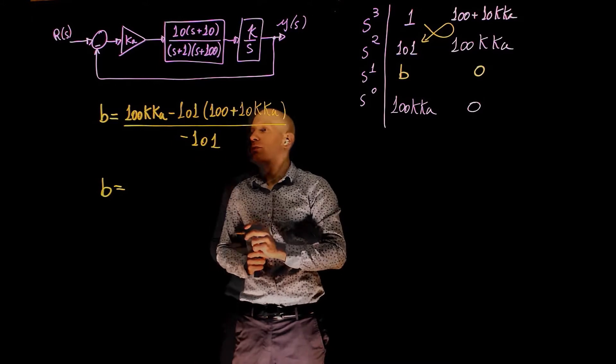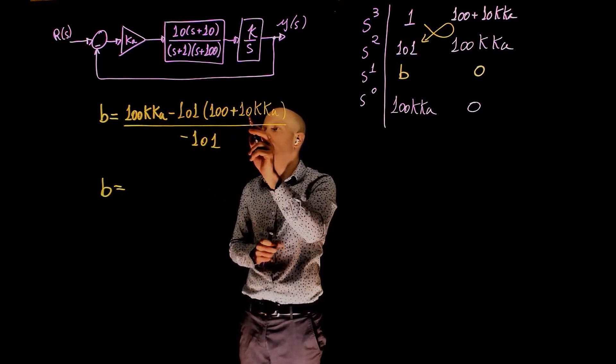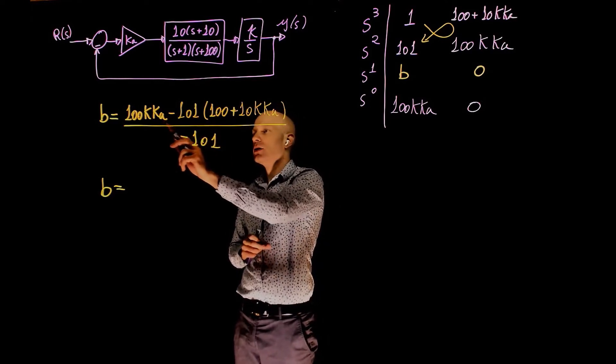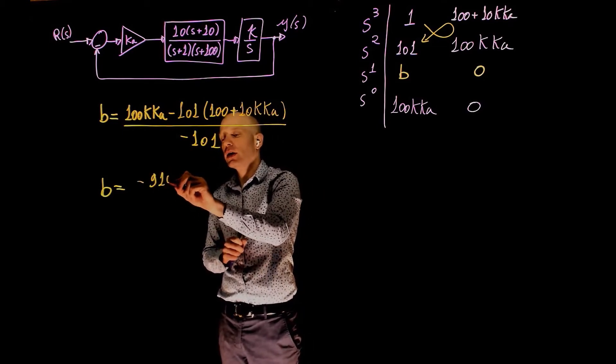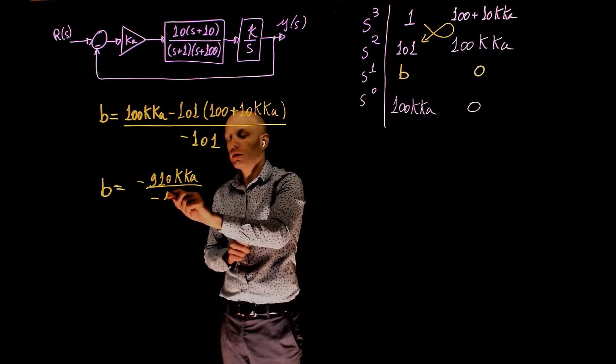b will be 100kka minus 101 times 10kka. This is 1010 minus 100, that is negative 910kka divided by negative 101.